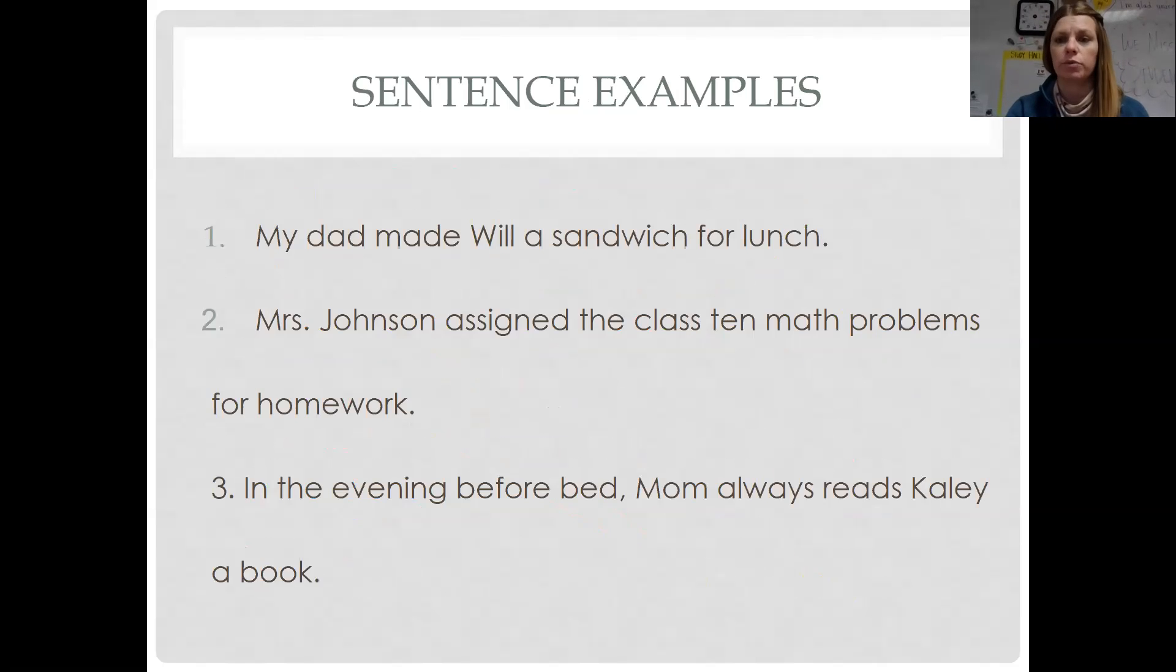Let's do a quick couple examples. My dad made Will a sandwich for lunch. Let us label. Dad. Will. Sandwich. Lunch. All right. Which dad? My dad. Which Will? No answer. Which sandwich? A. Which lunch? No answer. Now let's do our prepositional phrases. For is a preposition. For lunch is a prepositional phrase. The only word we have left is made. That is our action verb. And then you want to look at the nouns and verbs. And you're going to circle those. Dad. Will. Sandwich.